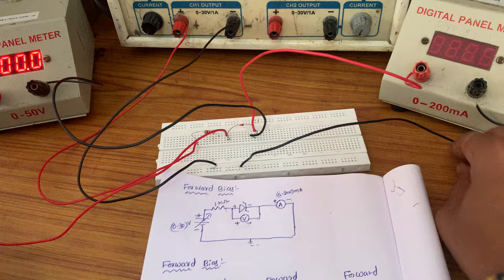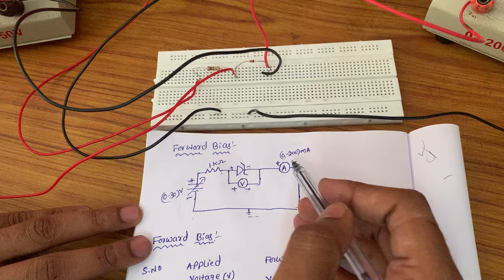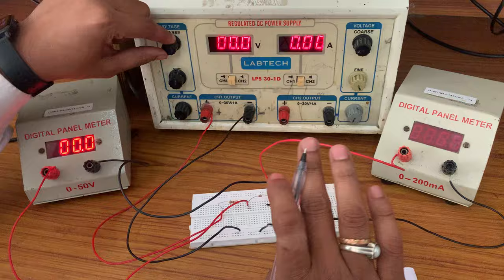Instead of connecting the ammeter negative to ground and the RPS negative to ground separately, you can connect the RPS negative directly to the ammeter negative — you will get the same values. This is the circuit diagram of the Zener diode in forward bias. Now, by increasing the RPS values, we will observe the readings.